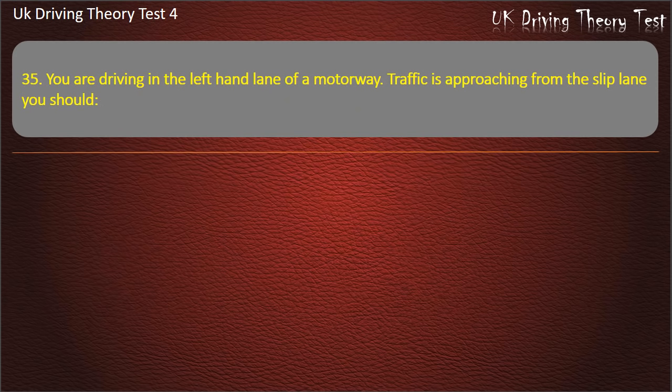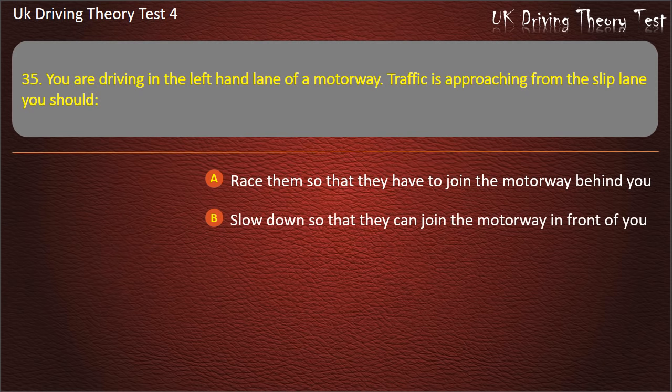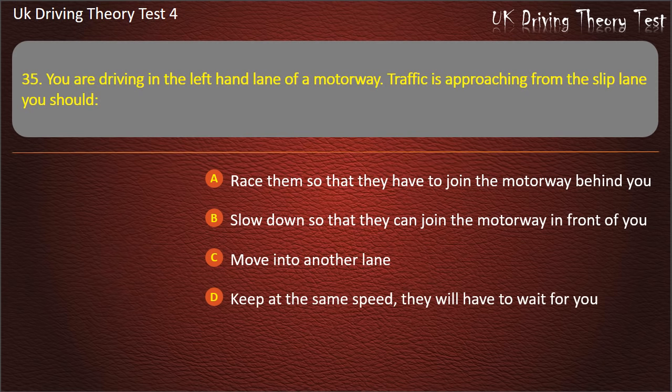Question 35. You are driving in the left-hand lane of a motorway and traffic is approaching from the slip lane. You should: race them so they have to join behind you; slow down so they can join in front of you; move into another lane; or keep at the same speed.